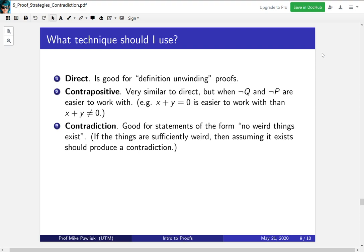So what techniques should you use when you're trying to prove an implication? In general, these are the three pieces of advice I would give. A direct proof is good for definition unwinding proofs.